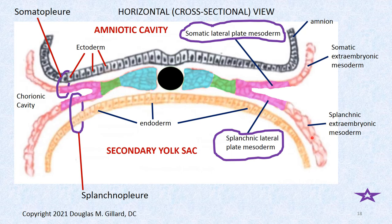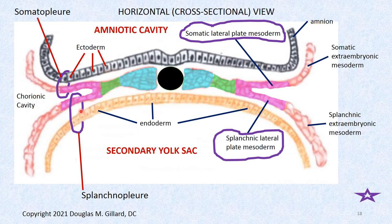The parietal extraembryonic mesoderm and visceral extraembryonic mesoderm are also terms used. Here's the concept of the somatopleure — it's simply parietal lateral plate mesoderm in combination with the ectoderm above. Those two layers make up the somatopleure. The visceral lateral plate mesoderm combines with the endoderm to form the splanchnopleure. That's how that works.